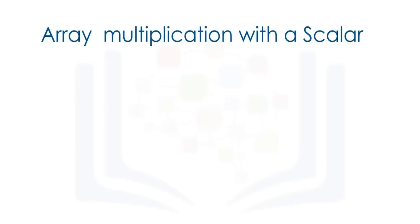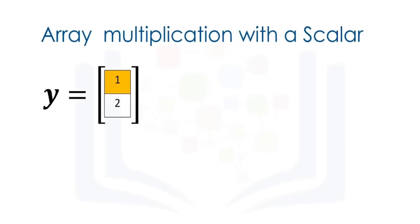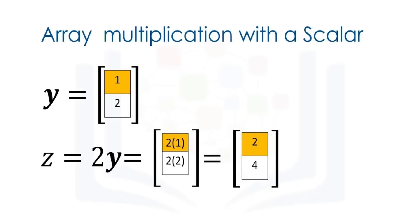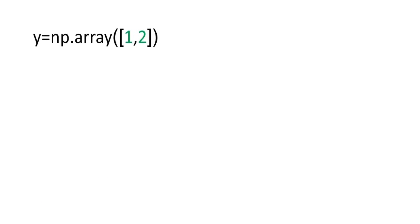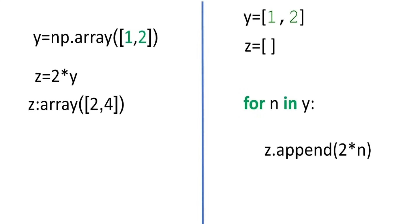Vector multiplication with a scalar is another commonly performed operation. Consider the vector y — we simply multiply the vector by a scalar value, in this case 2. Each component of the vector is multiplied by 2 and doubled. The original vector y is shown in purple, and after multiplying by a scalar of 2, the vector is stretched out by 2 units, shown in red — twice as long in each direction. Vector multiplication with a scalar only requires one line of code using NumPy, compared to multiple lines with Python lists, and the operation is also much faster.